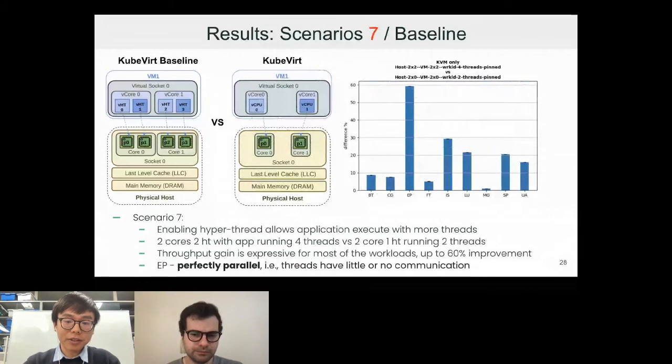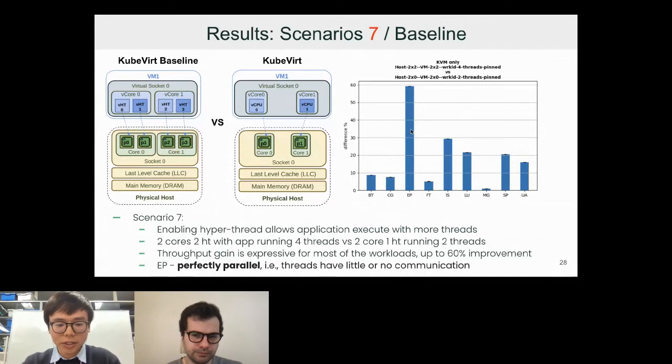For scenario seven, this is the case where we want to check how much throughput we gain from hyperthreading. We are comparing two threads with two cores with hyperthreading enabled, and then we disable the hyperthreading by only allocating two dedicated cores. This is the throughput gain you get. As you can see, the EP benchmark, which is called Embarrassingly Parallel, you're getting 60 percent of performance gains because they also call it the Perfect Parallel because the tasks really require little, almost no communication. This is quite important for some tasks like image processing because you can just process those individual frames independently without any dependency.